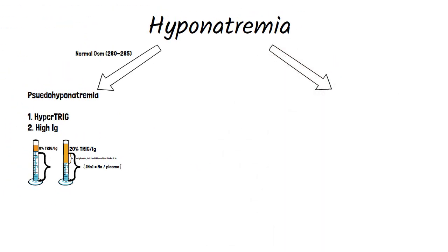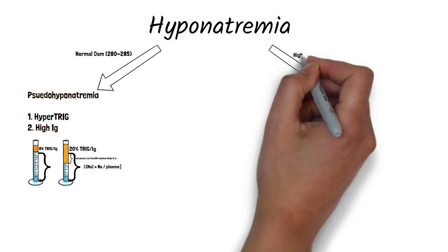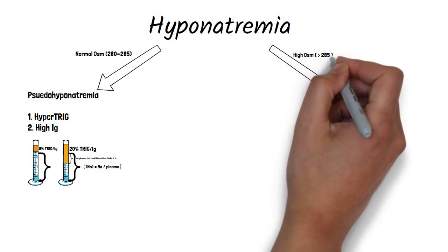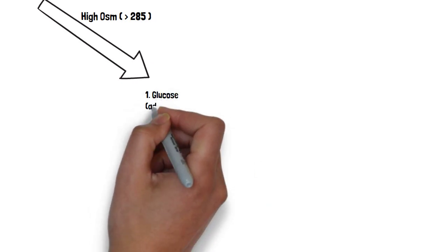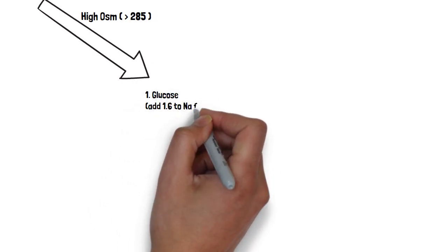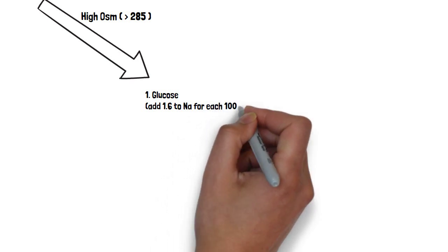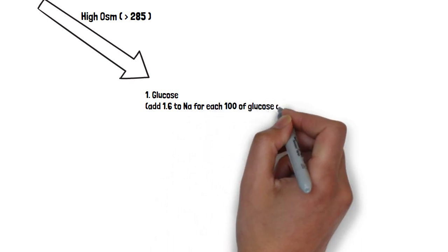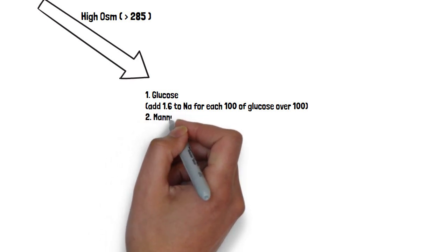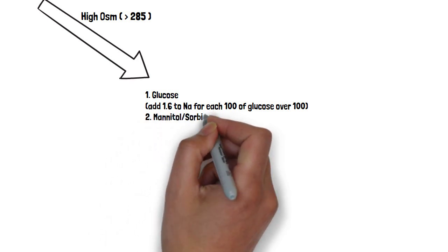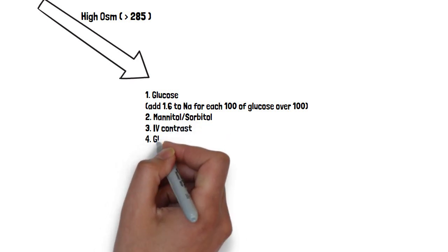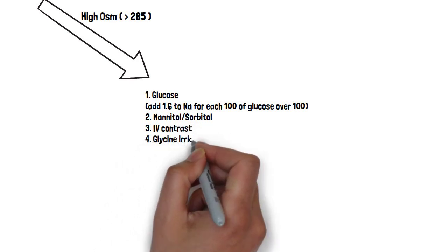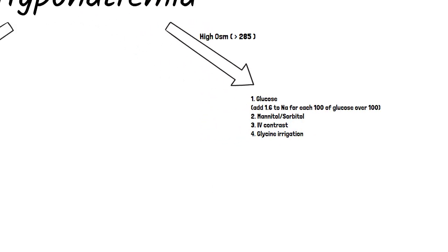There's other times in instance where you have a high osmolarity in the plasma, greater than 285. We know this commonly happens from glucose. And there's a nice little thing to remember for this. Call it the sweet 16. Add 1.6 to sodium for every 100 of glucose over 100 to correct. Second are drugs like mannitol and sorbitol. Thirdly, IV contrast agents can do this. After they've gotten a CT, you check a BMP, it might be low. And then glycine irrigation.